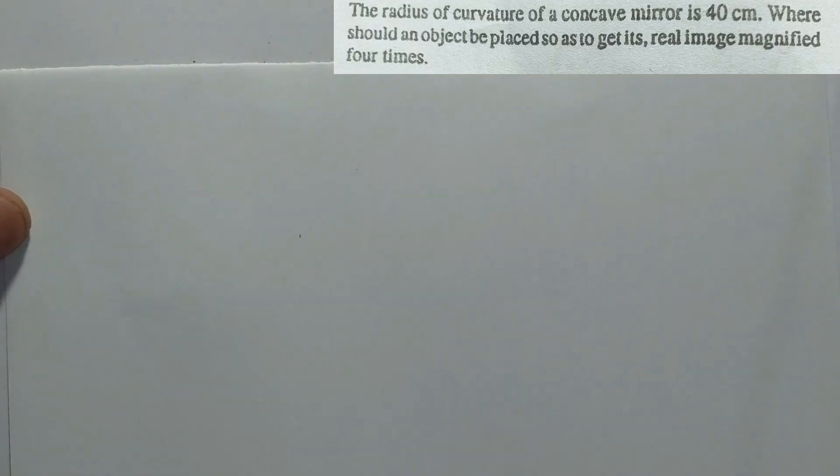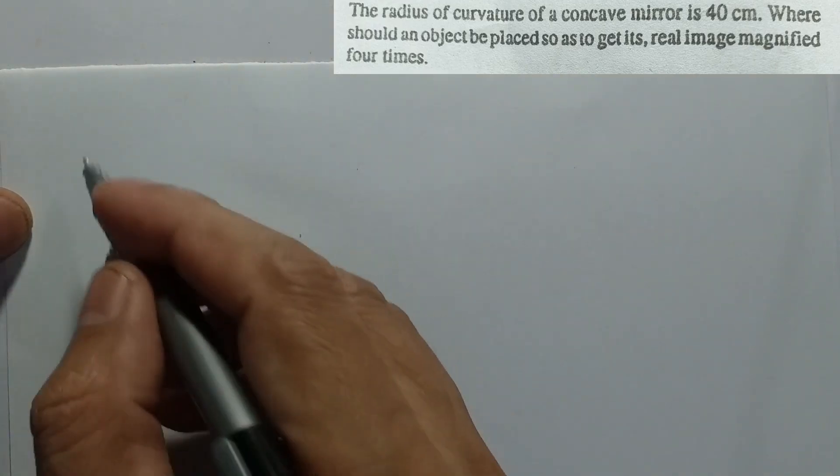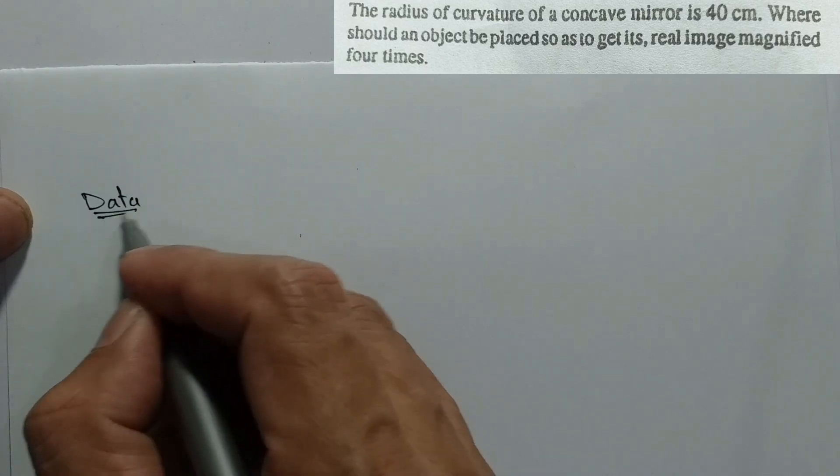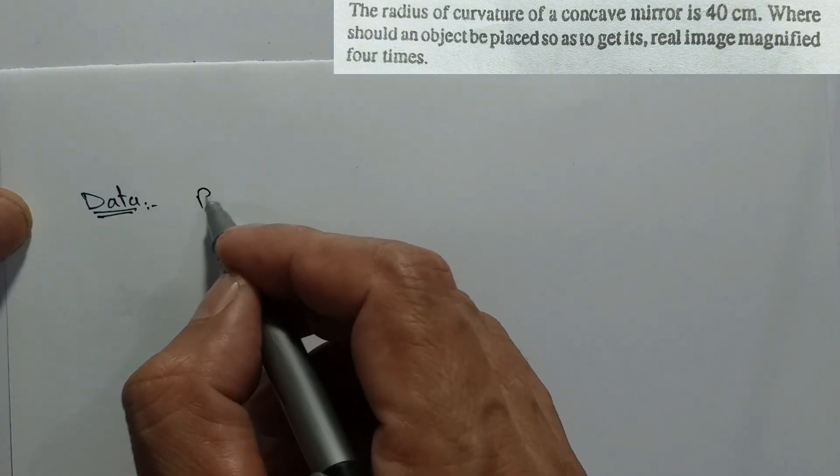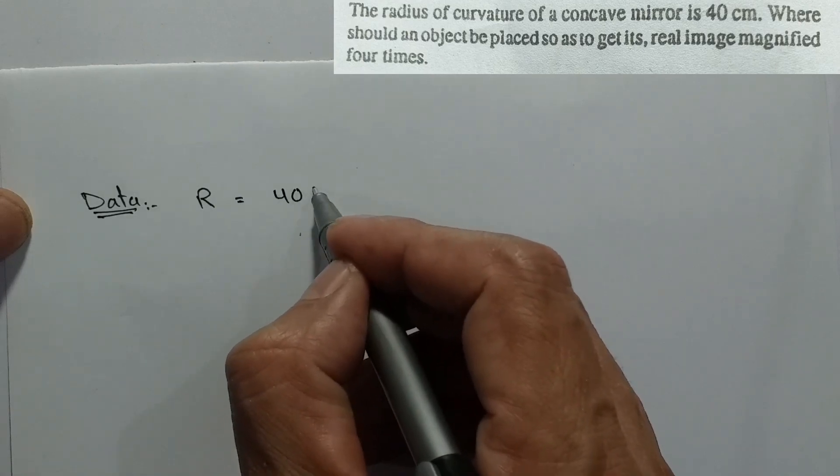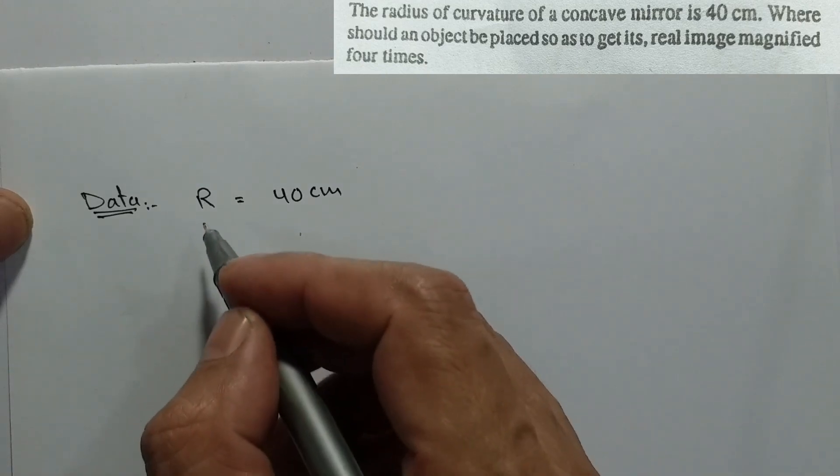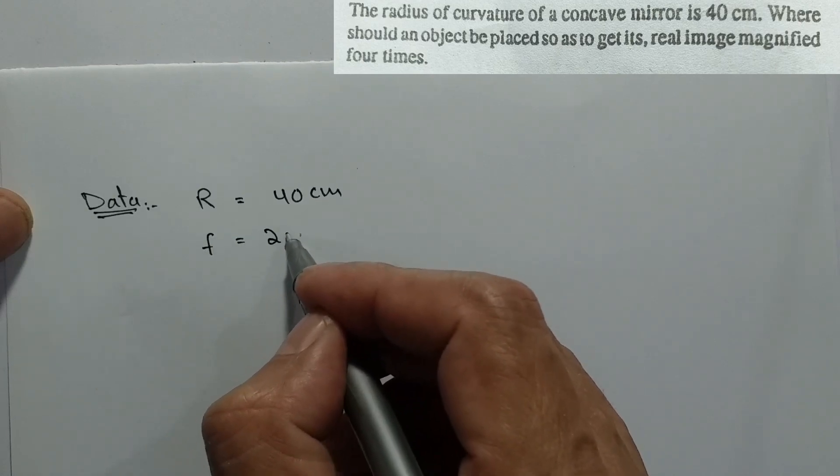The given data is radius of curvature R equals 40 cm. We can see the focal length is half the radius of curvature, so the focal length f is 20 cm.